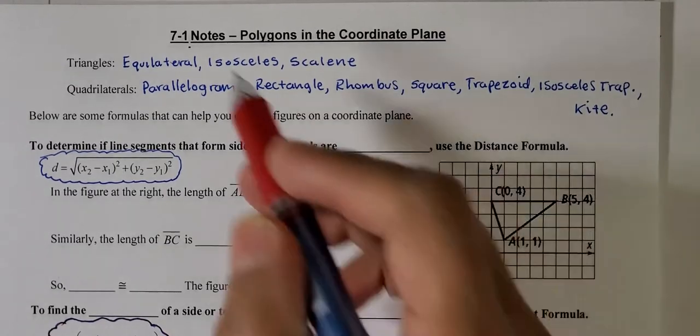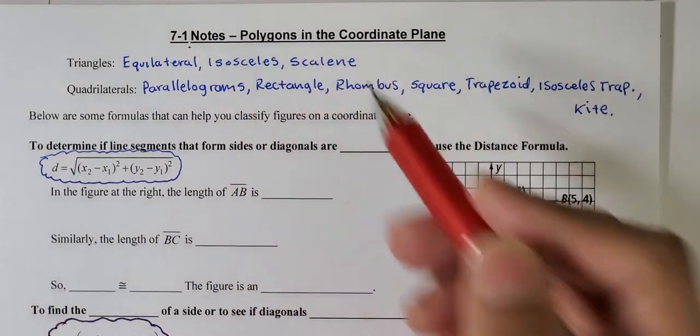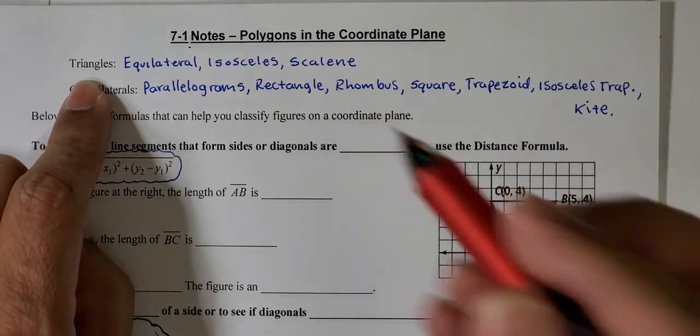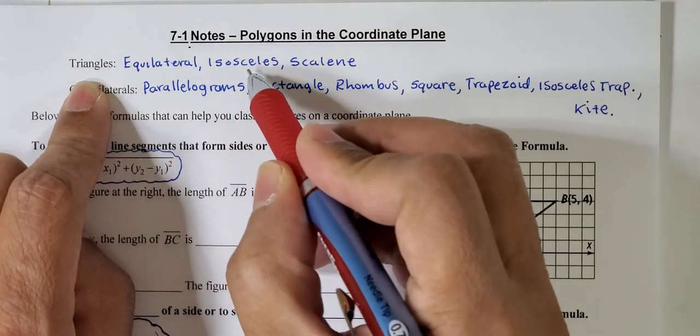Hey everyone, this is note 7-1, polygons in the coordinate plane. So for triangles, so far we can classify triangles as equilateral, isosceles, and scalene.